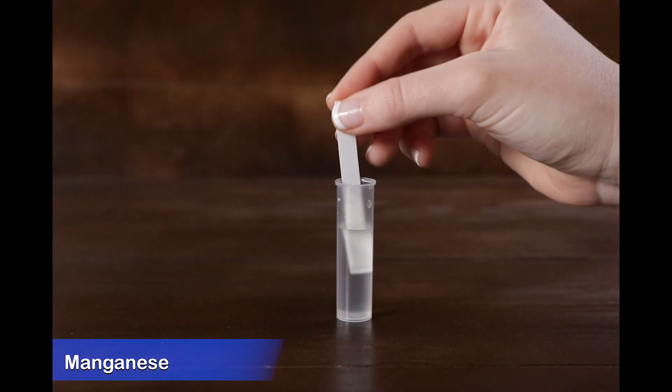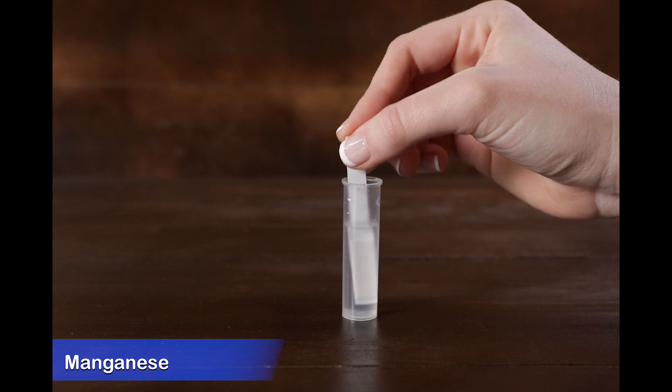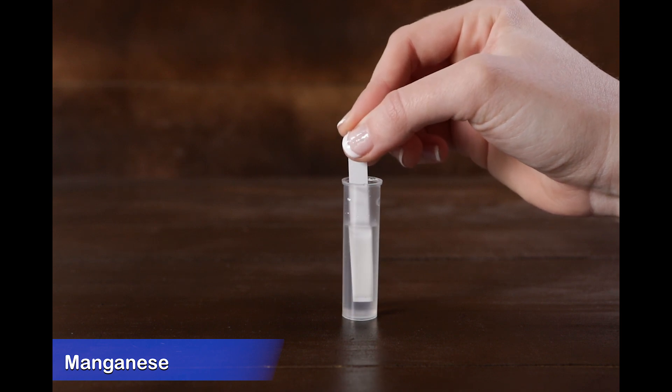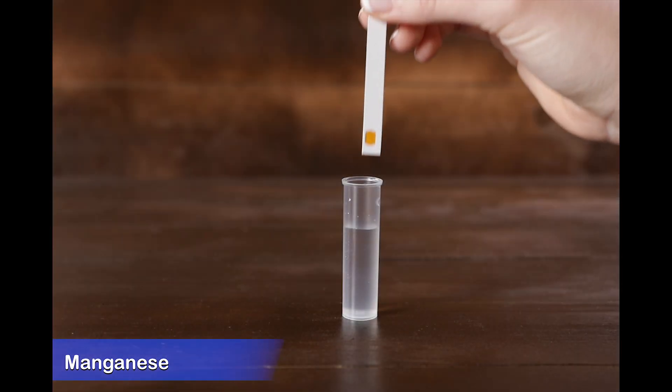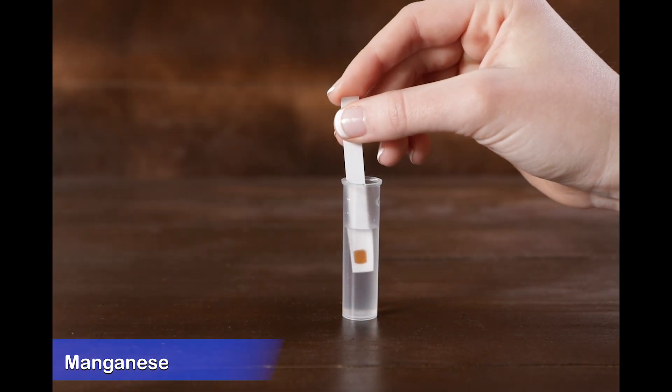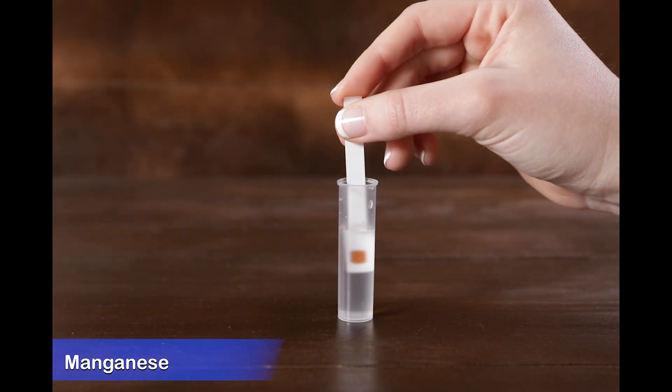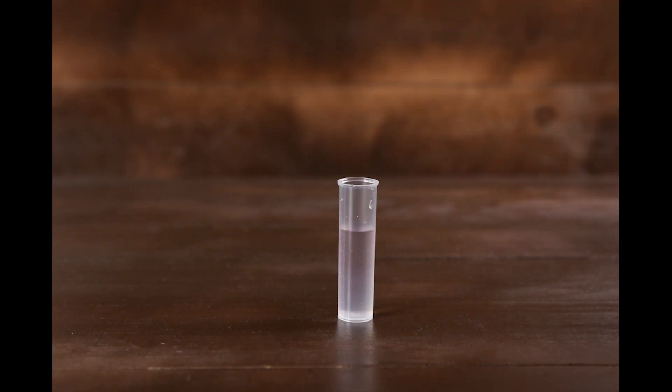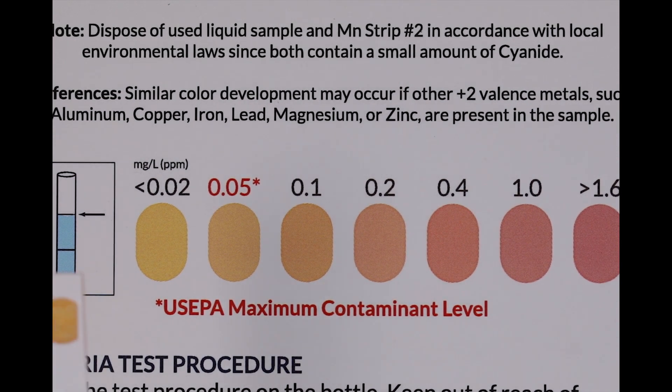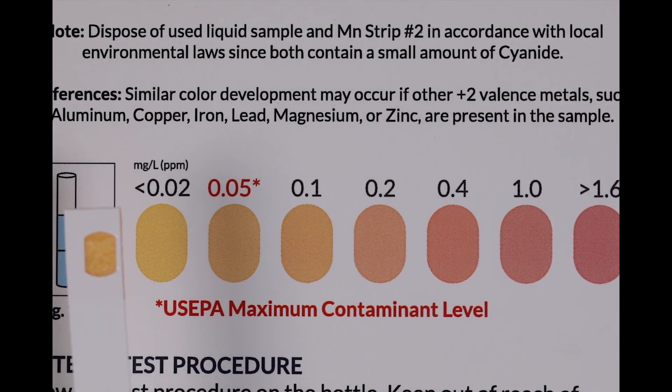Dip manganese strip number two into the vial for 20 seconds using a constant back and forth motion. Discard the strip. Dip manganese strip number three into the vial for 30 seconds using a constant back and forth motion. Remove the strip and shake off excess water. Wait three minutes then match the strip to the color chart.